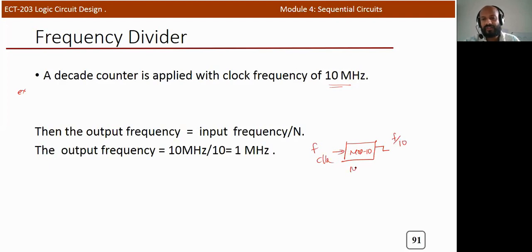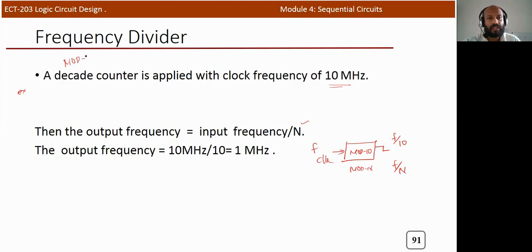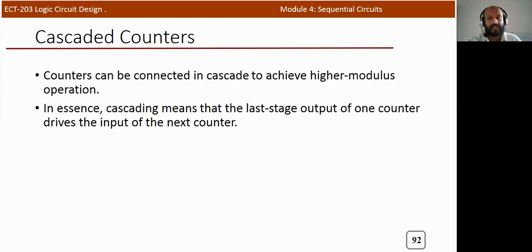In general, for a mode n counter, the output frequency equation is f_out = f_input / n. In this example, the input frequency is 10 MHz and it is a decade counter (mode 10), so the output frequency will be 1 MHz.